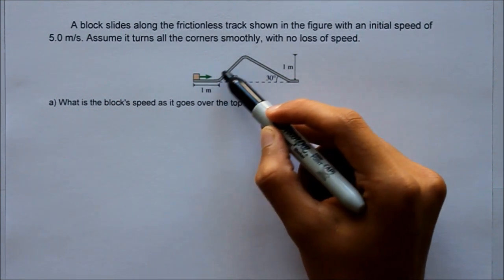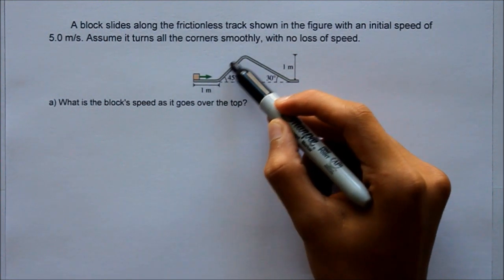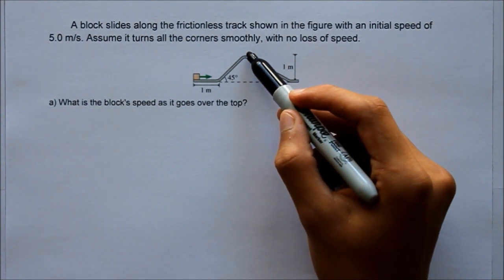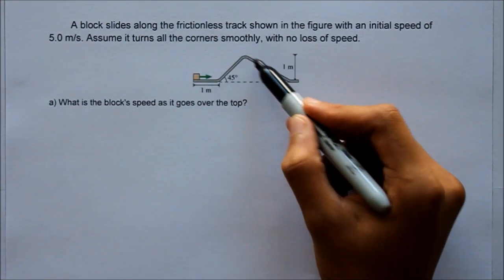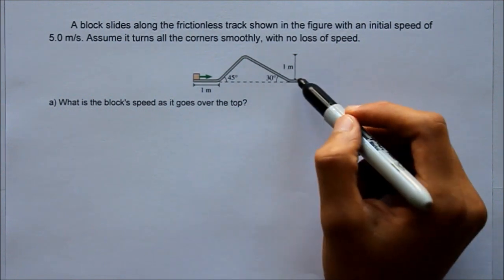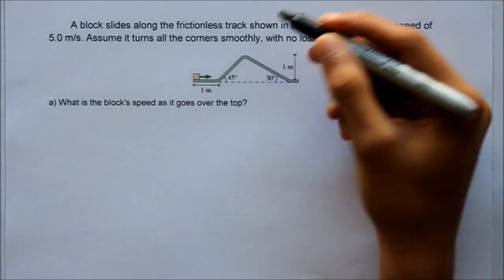When it goes up, the velocity vector is going to be pointing in this direction, and the acceleration is going to be pointing downwards. So we expect it to slow down. But then when it comes around this corner and starts going this way, the velocity and acceleration are both going to point this way. So we expect it to speed up. And it gives us that this height is 1 meter.